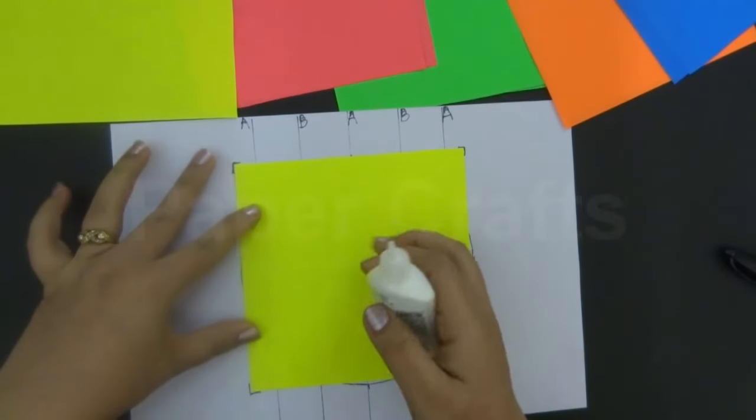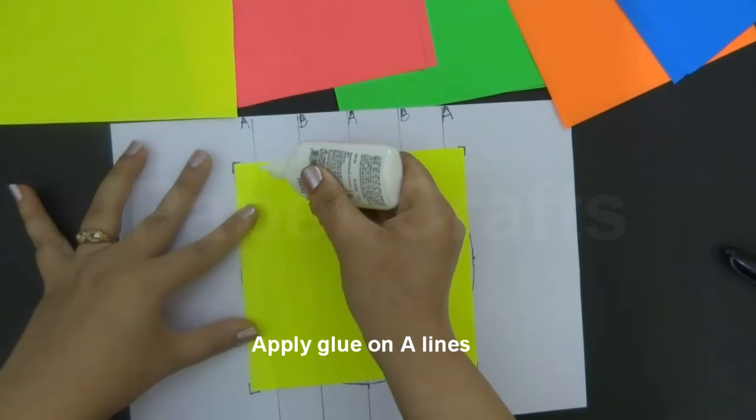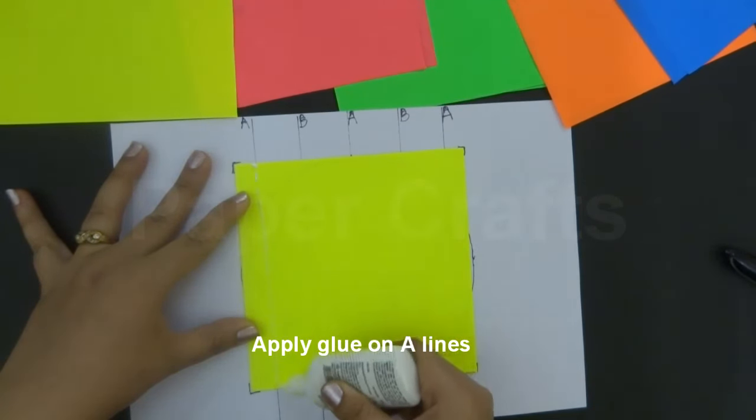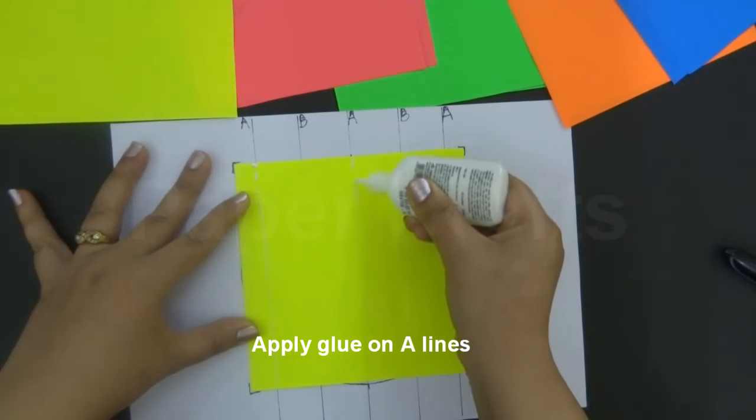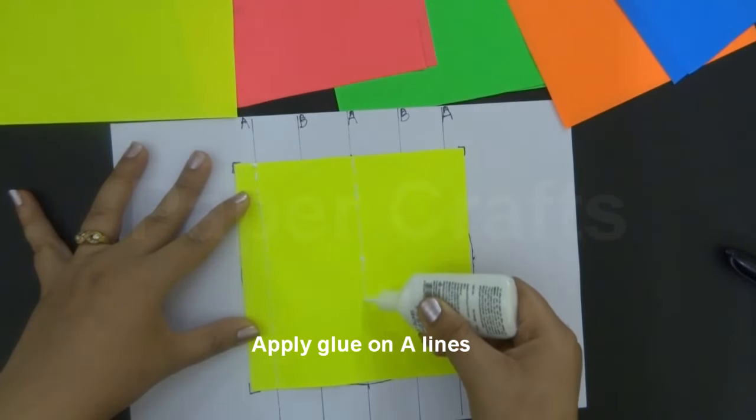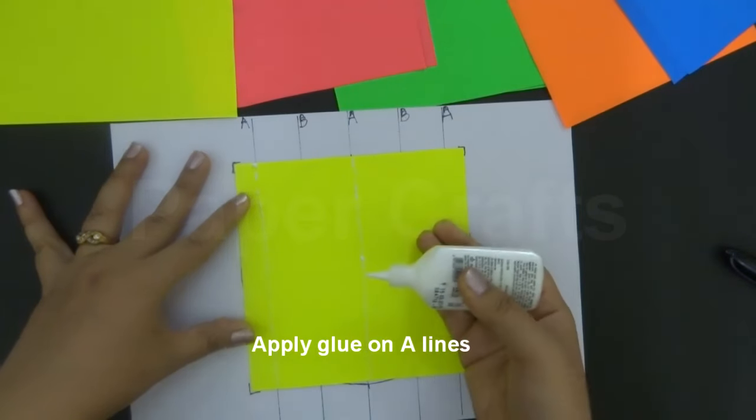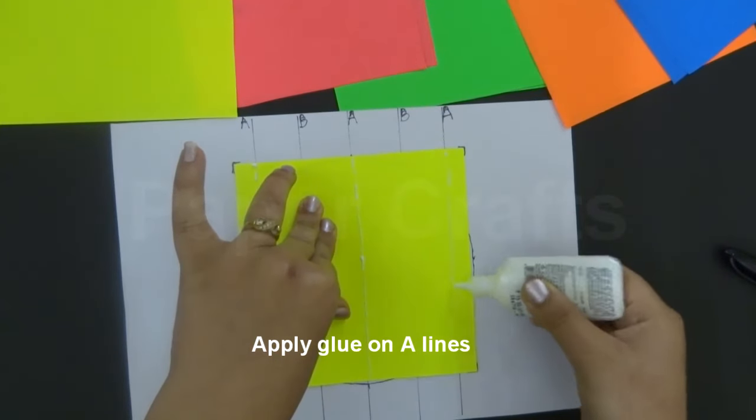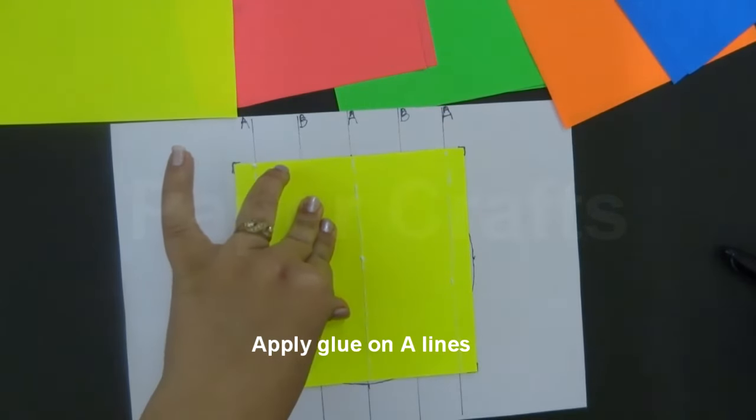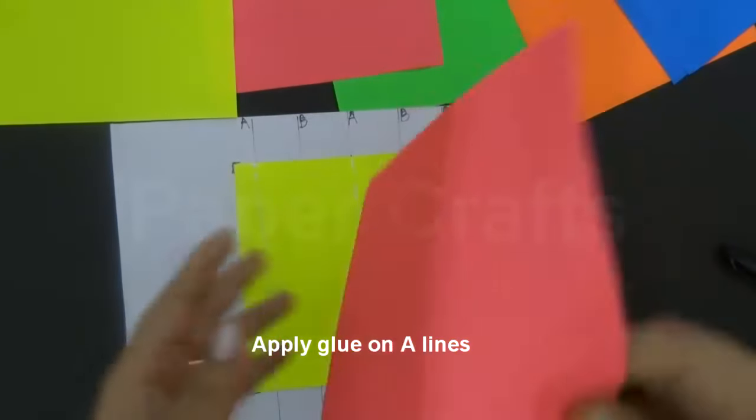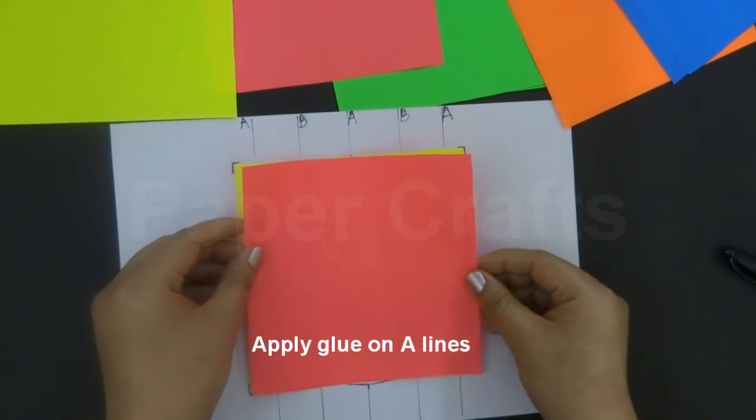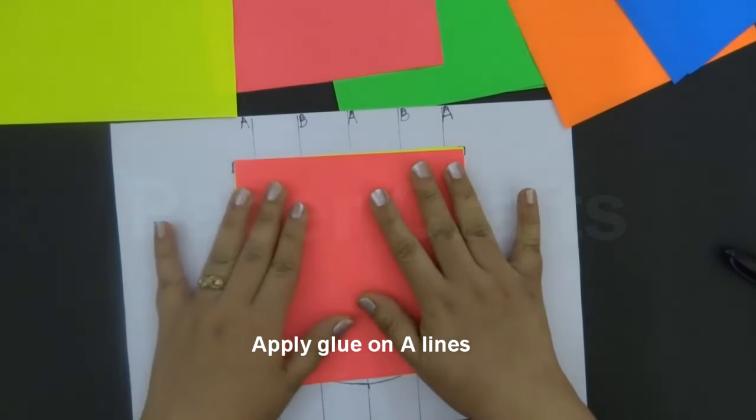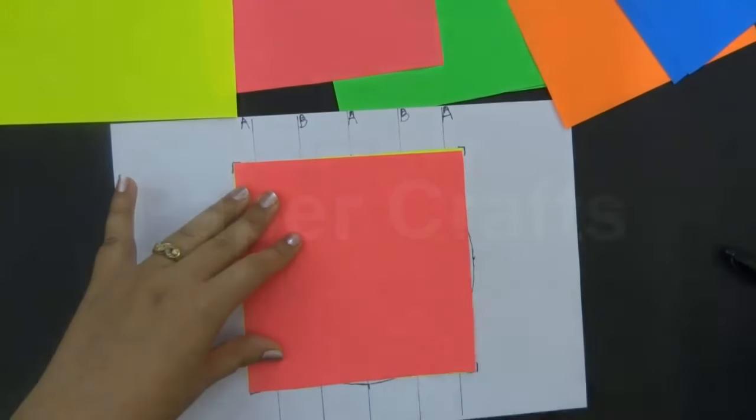We will apply glue along the A lines. Place another colored sheet over it. This will form the first layer of our honeycomb. Now apply glue along the B lines.